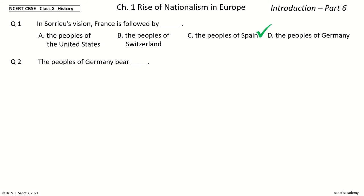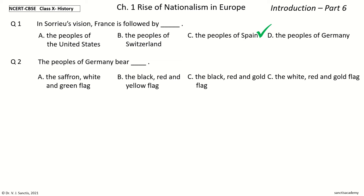Question 2: The peoples of Germany bear [blank]. The options are: the saffron, white and green flag; the black, red and yellow flag; the black, red and gold flag; the white, red and gold flag. The answer is the black, red and gold flag.